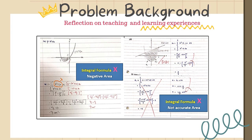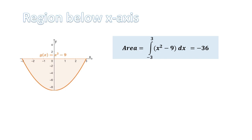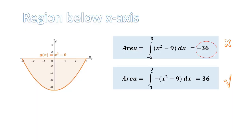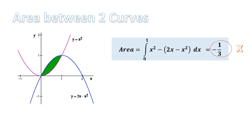When students are tasked with calculating the area between two curves using integration, they may struggle to construct the integral formula required for the calculation properly. This confusion can arise due to the need to identify the correct upper and lower curves and determine the appropriate limits of integration. In students' work, two significant mistakes have been identified: negative values of the calculated area and inaccurate area calculations. The occurrence of negative values for the calculated area is a common error that often arises due to inaccuracies in determining the correct upper and lower curves when setting up the integral formula. If the curves are not identified correctly or if the limits of integration are reversed, it can lead to the integration yielding a negative value, which does not represent the actual area.